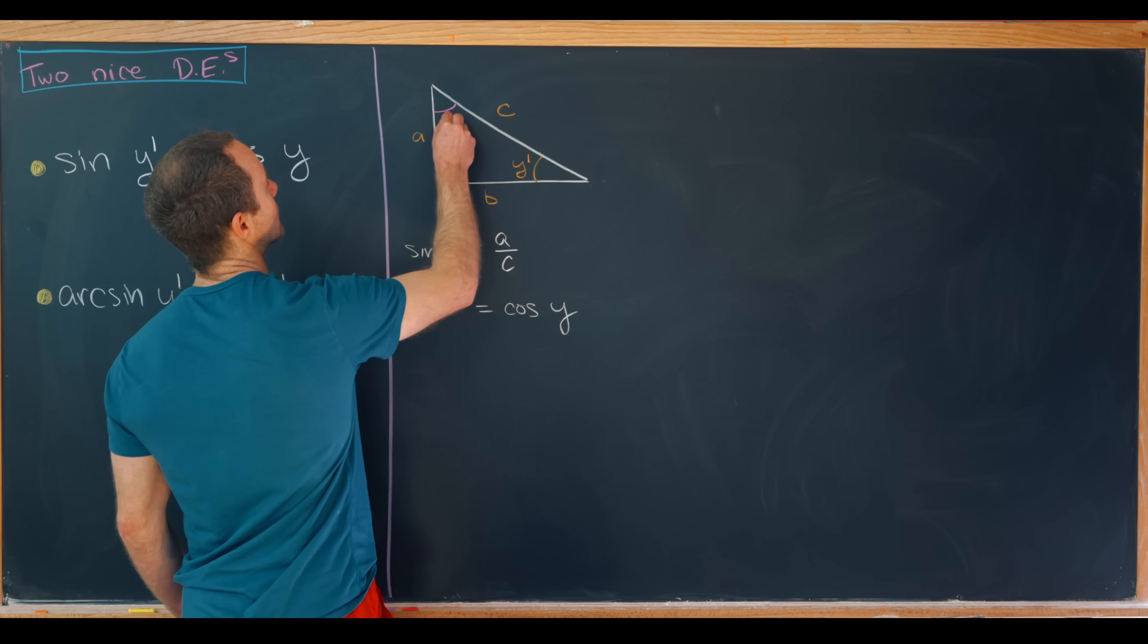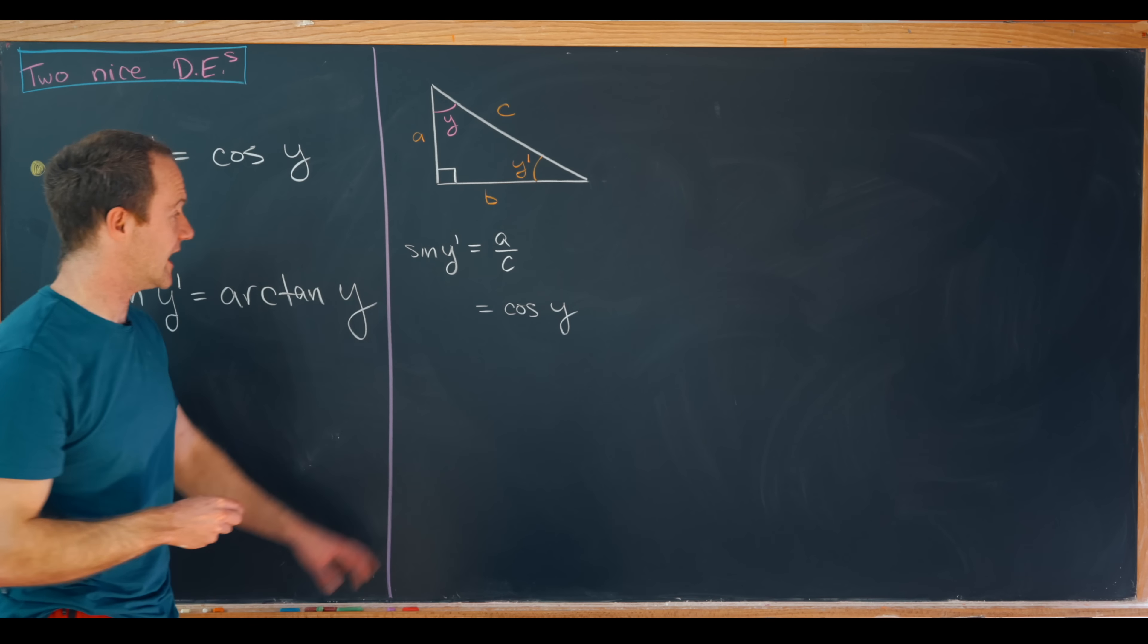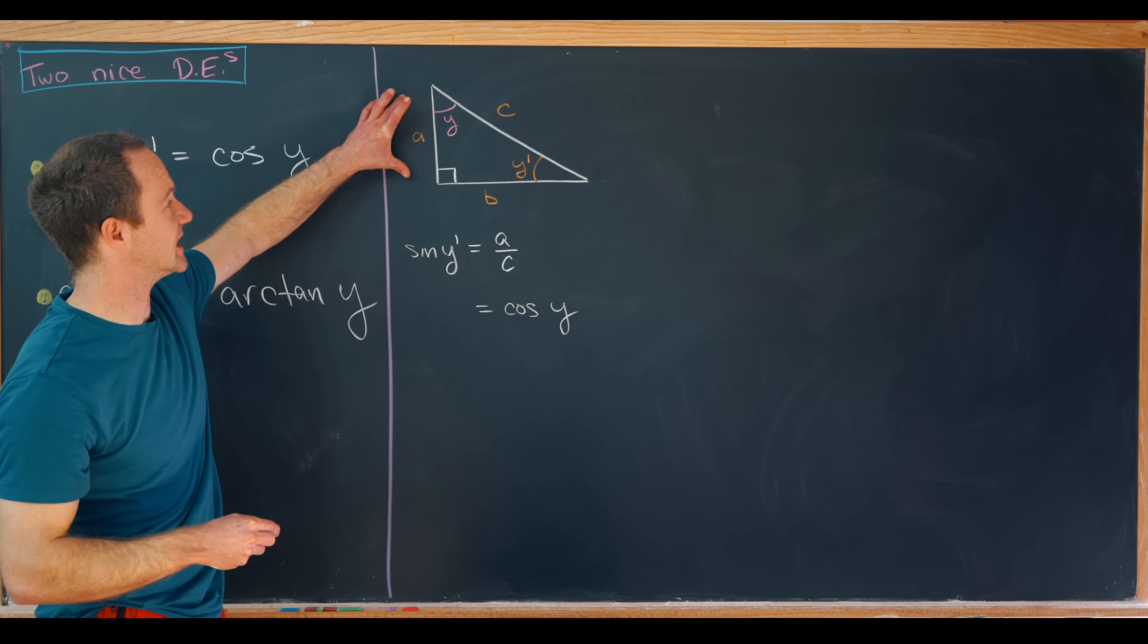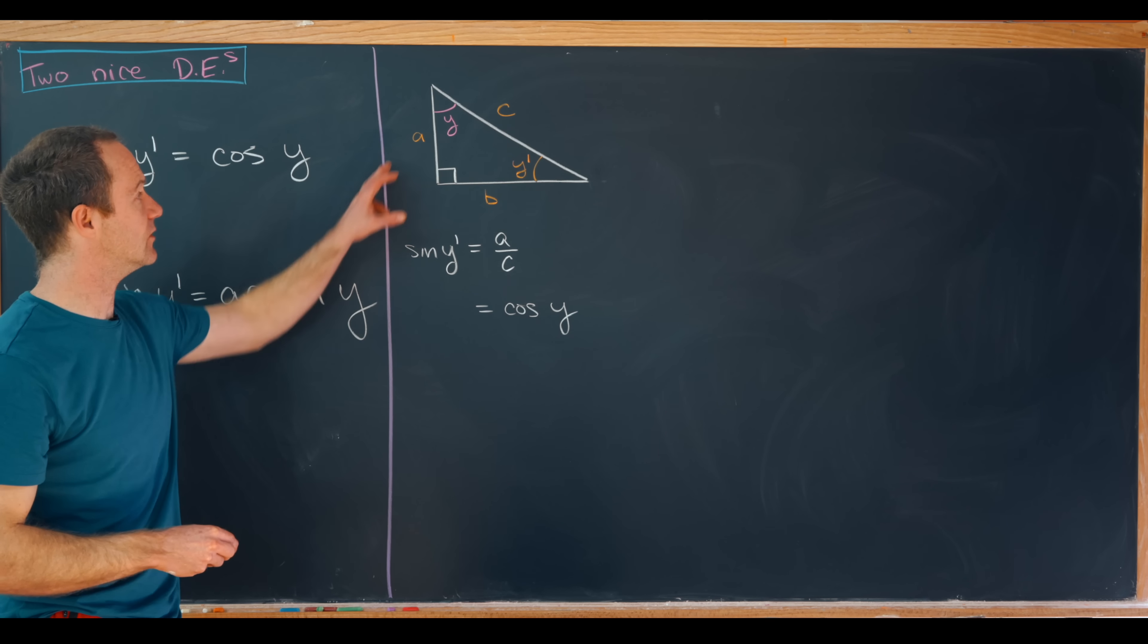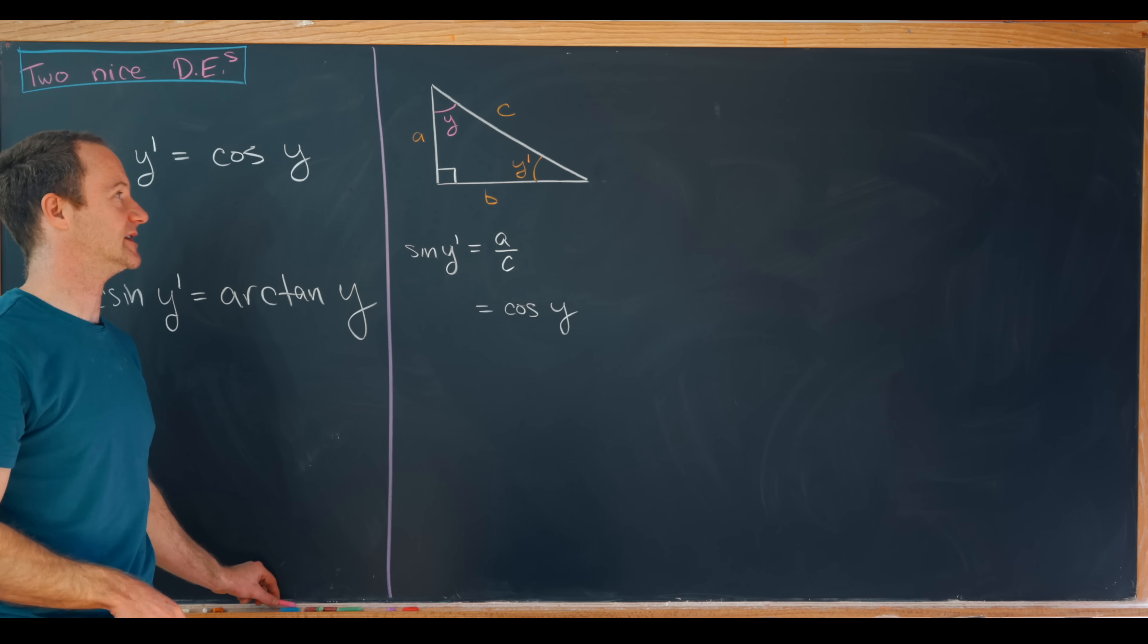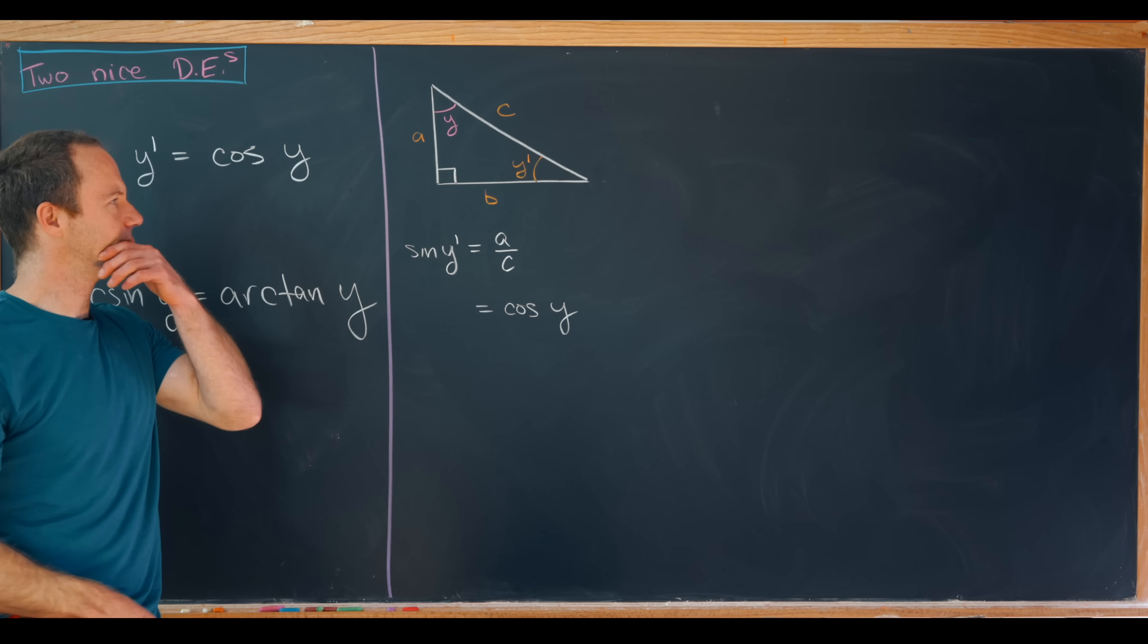If we turn our head sideways we can see that that's built into this triangle as well. If this angle right here is y, then the cosine of y is adjacent over hypotenuse. In other words, it's equal to a over c just as is.